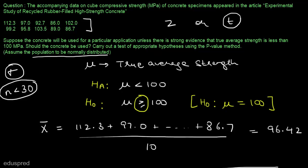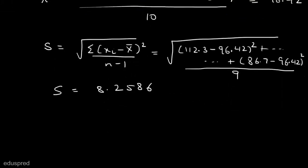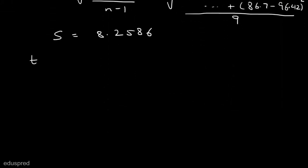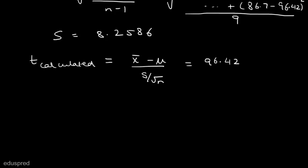Let's find the value of the test statistic. The t-calculated is equal to x-bar minus mu, divided by the sample standard deviation divided by the square root of n. We have x-bar equal to 96.42, mu under the null hypothesis is 100, the sample standard deviation is 8.25, and n equals 10. Solving this, the value of t is equal to minus 1.371.